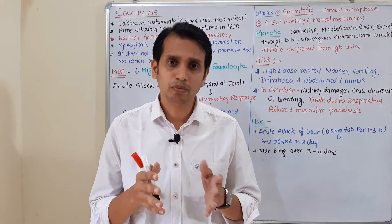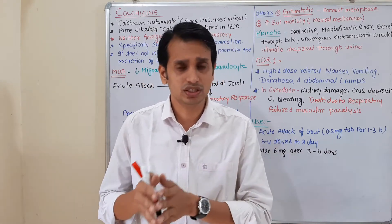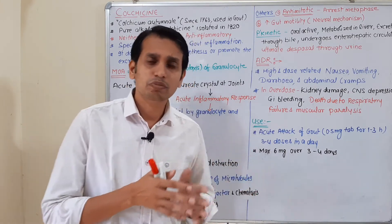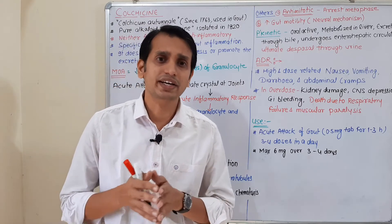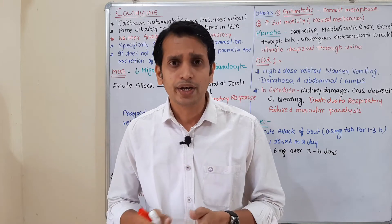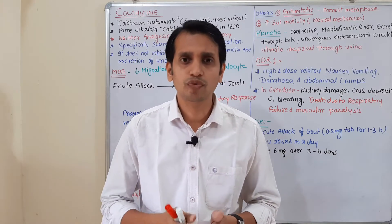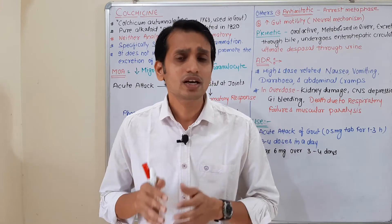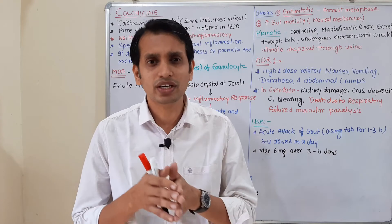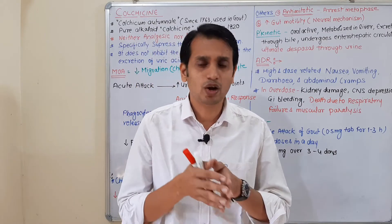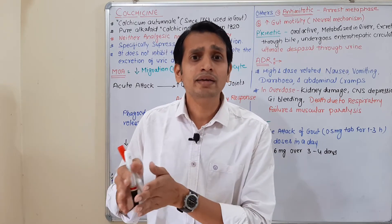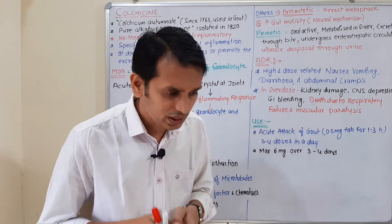Gout is of two types: acute and chronic. For the acute gout condition, we have three drugs: first, NSAIDs — non-steroidal anti-inflammatory drugs — such as indomethacin, naproxen, diclofenac sodium, and selective COX-2 inhibitors. Second drug is colchicine, which is a very important plant-derived alkaloid. Third, corticosteroids, which are anti-inflammatory drugs.